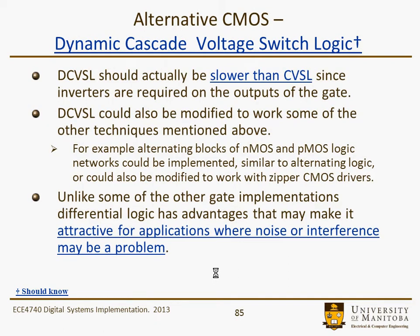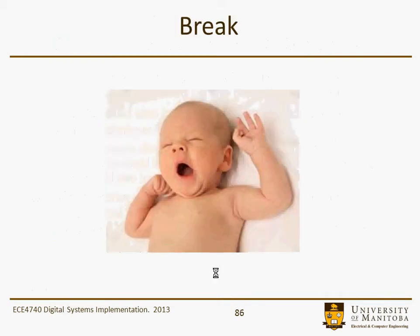Some advantages and disadvantages: one of the things we talked about before is that it's a dual-rail gate, so it may have some testing advantages which may show up later. At this point we'll take a brief break.